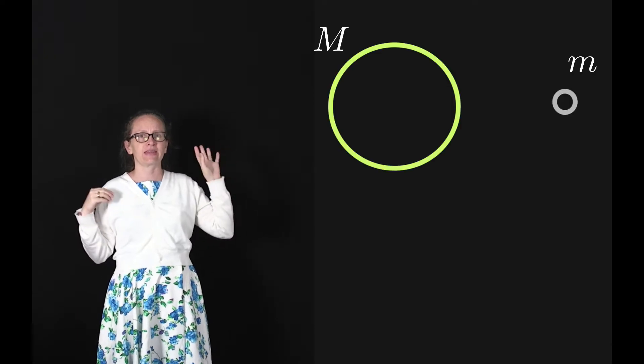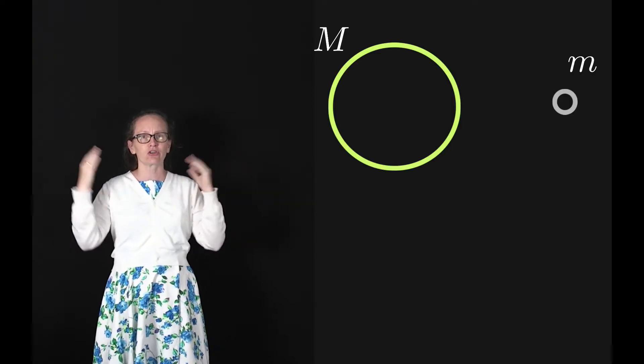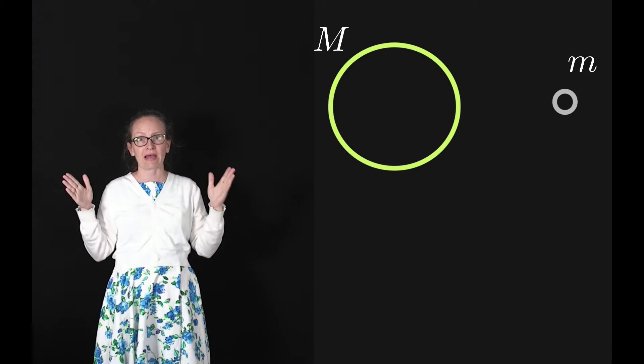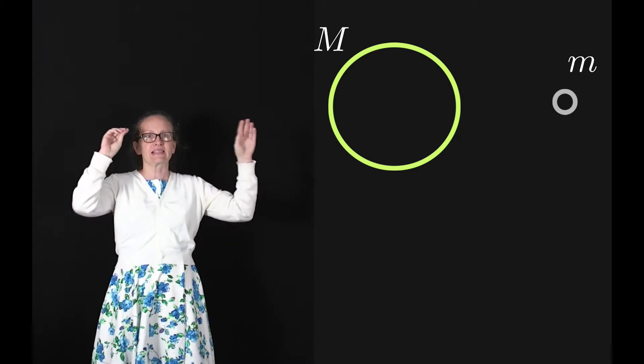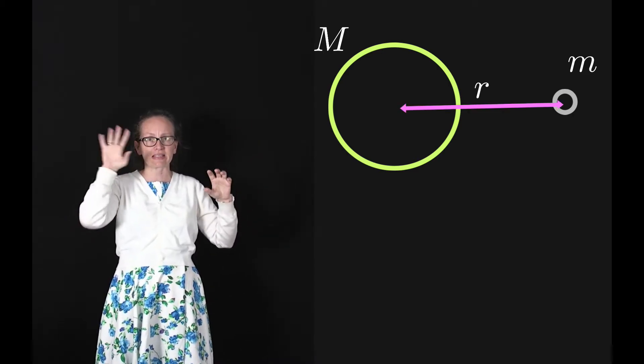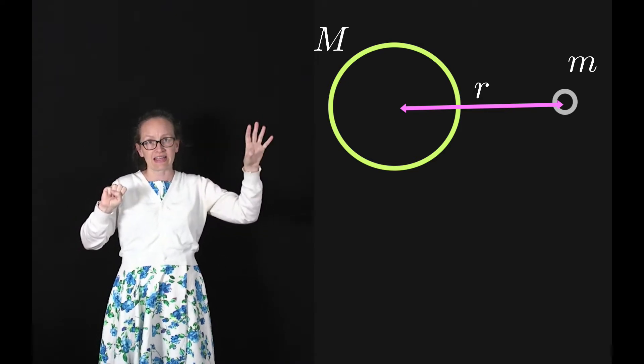Now we can consider orbital mechanics. Orbital mechanics is just the mechanics of an object which is in orbit. Let's consider a satellite with mass little m orbiting a planet with mass capital M at a distance r away. Little r is the distance between the center of the planet and the satellite.